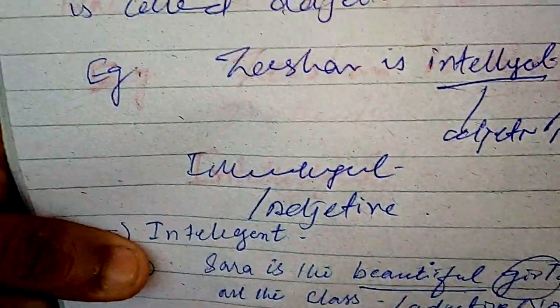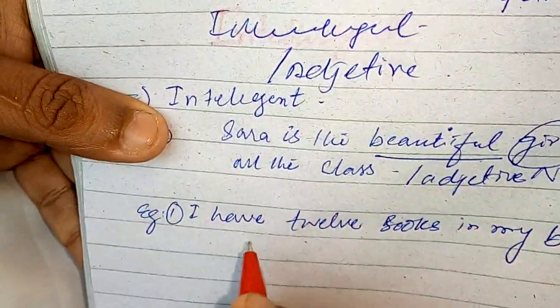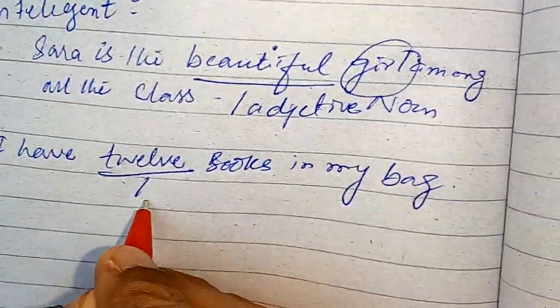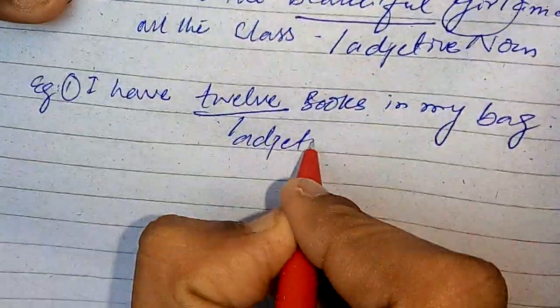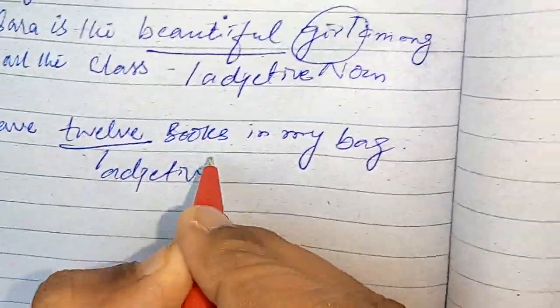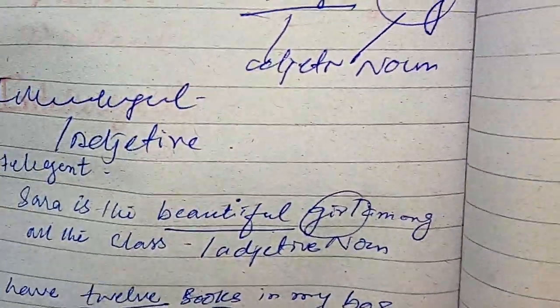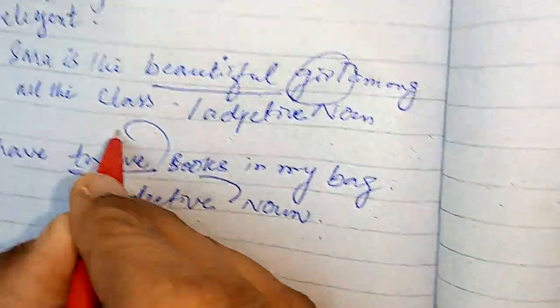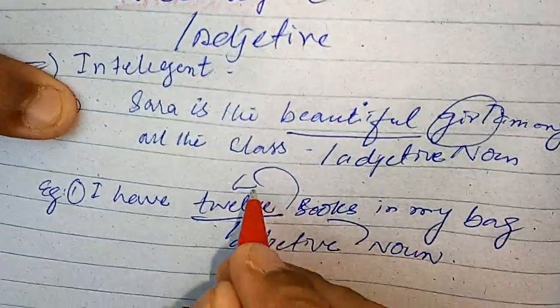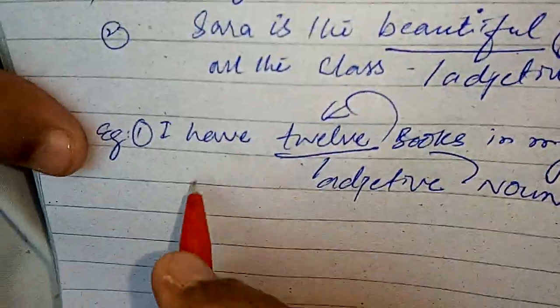This is an example — '12' here shows the adjective of quantity, and 'books' is the noun. It shows the quantity of the noun, so here '12' is an adjective of quantity. So '12' is an adjective which shows the quantity.